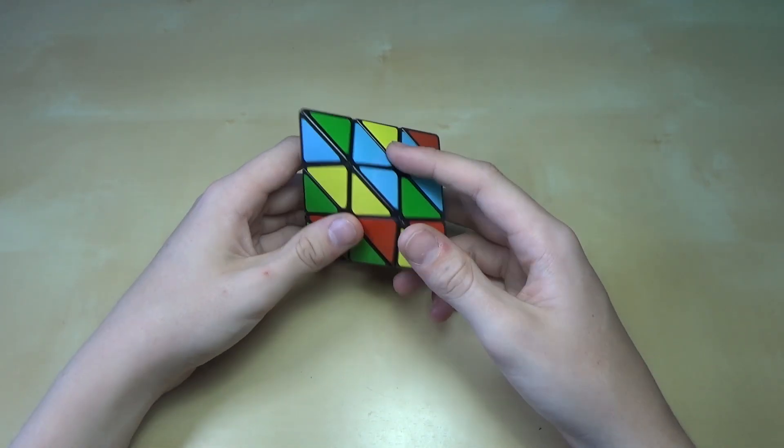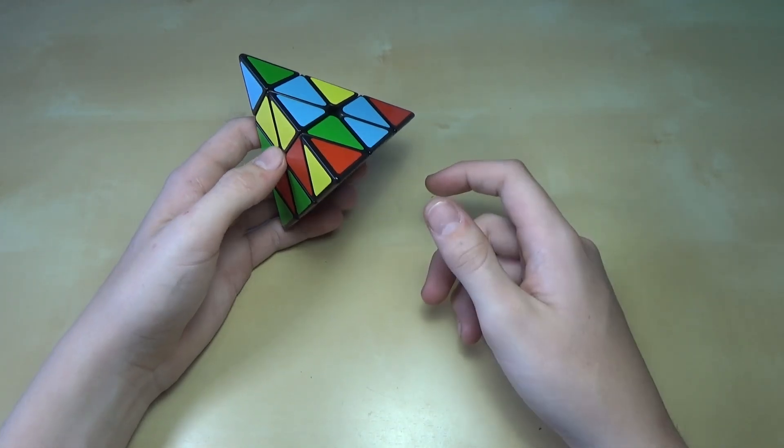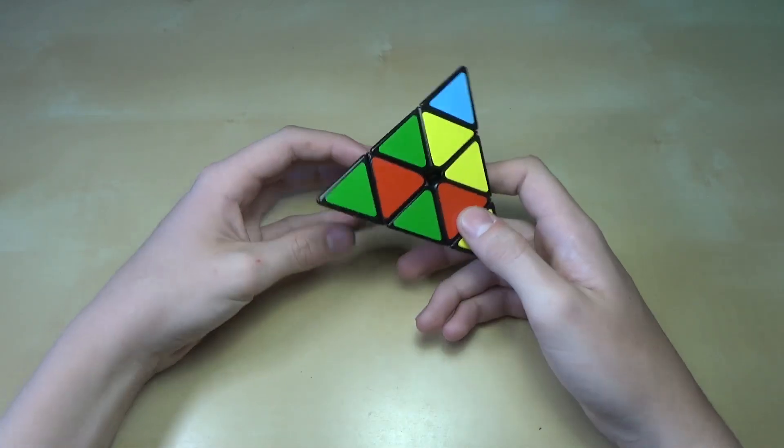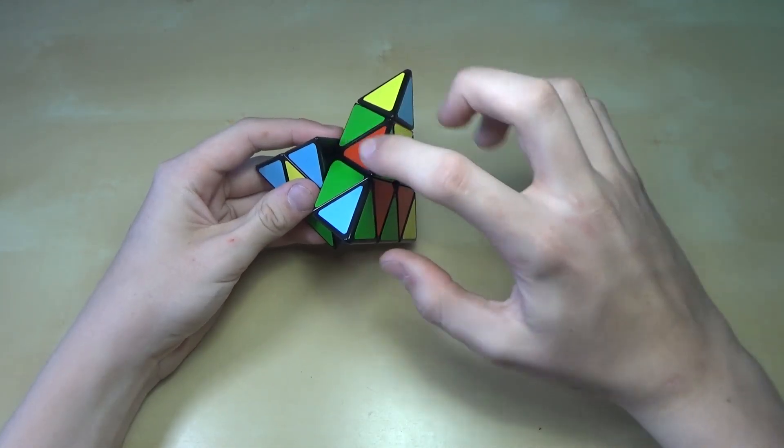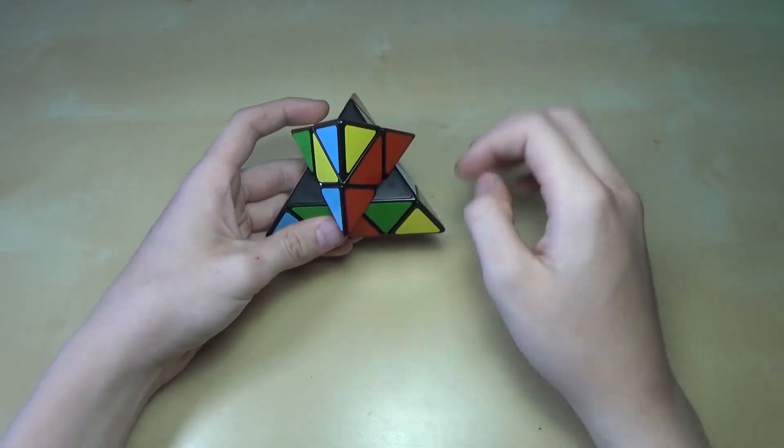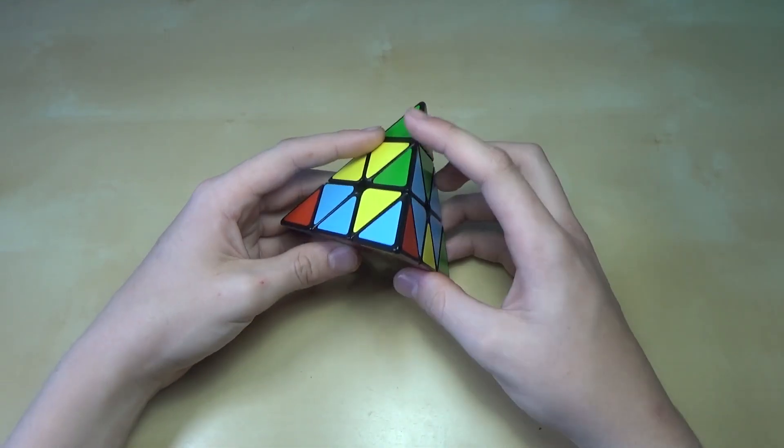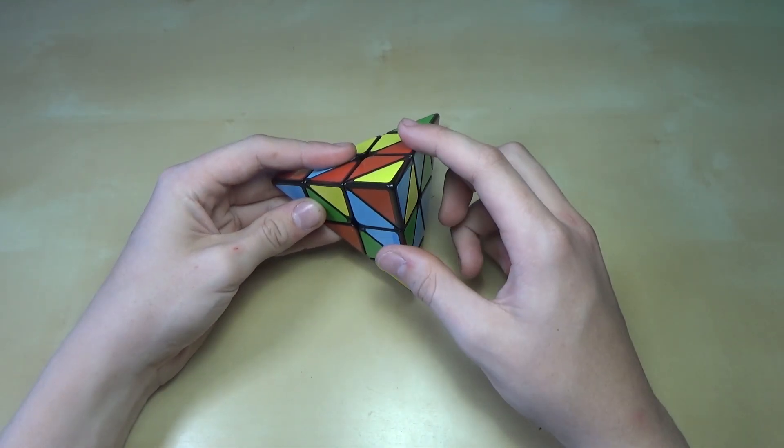Today I'm going to show you a method that I came up with on the Pyraminx that makes layer-by-layer really easy to do. Basically what layer-by-layer is, is where you get one layer, this whole part, this bottom part, and then you get the top half. The way that I do it basically forces the top half to be really easy.